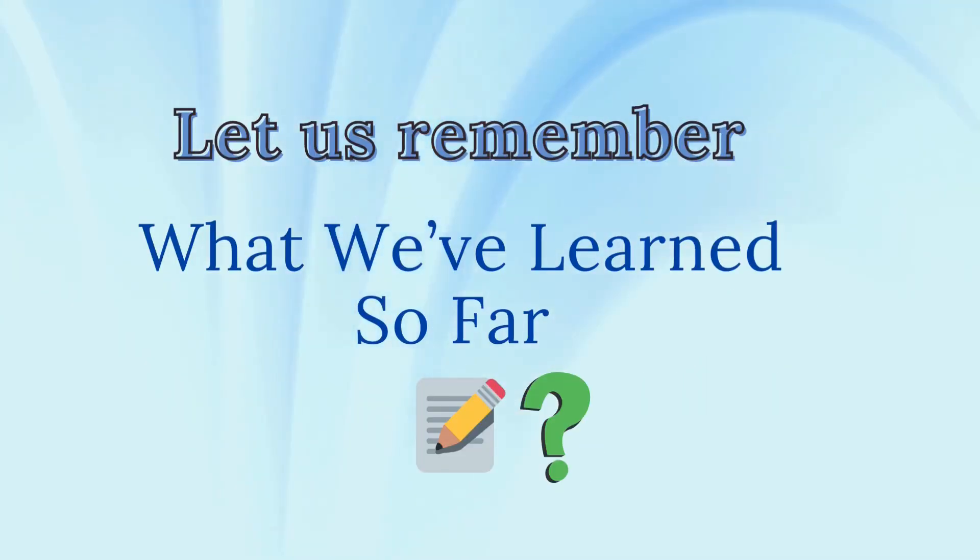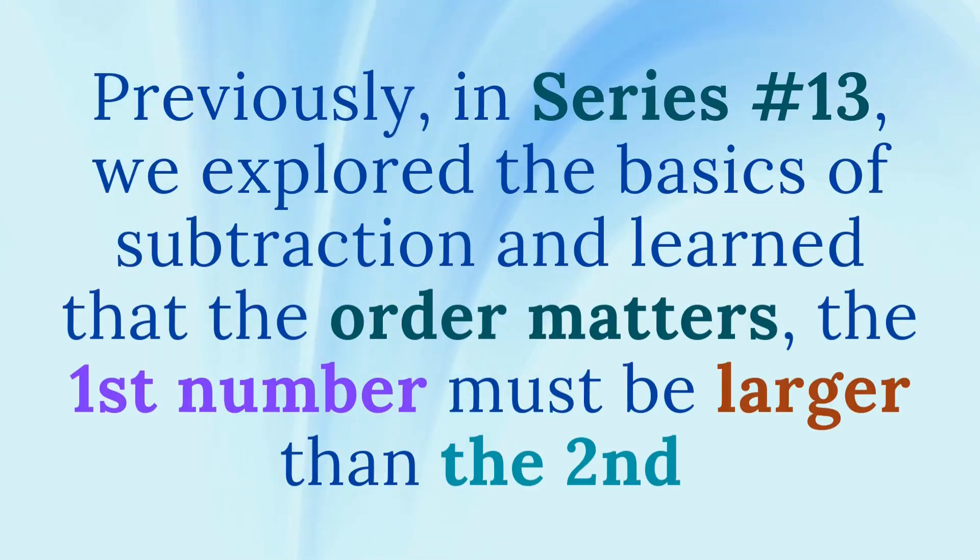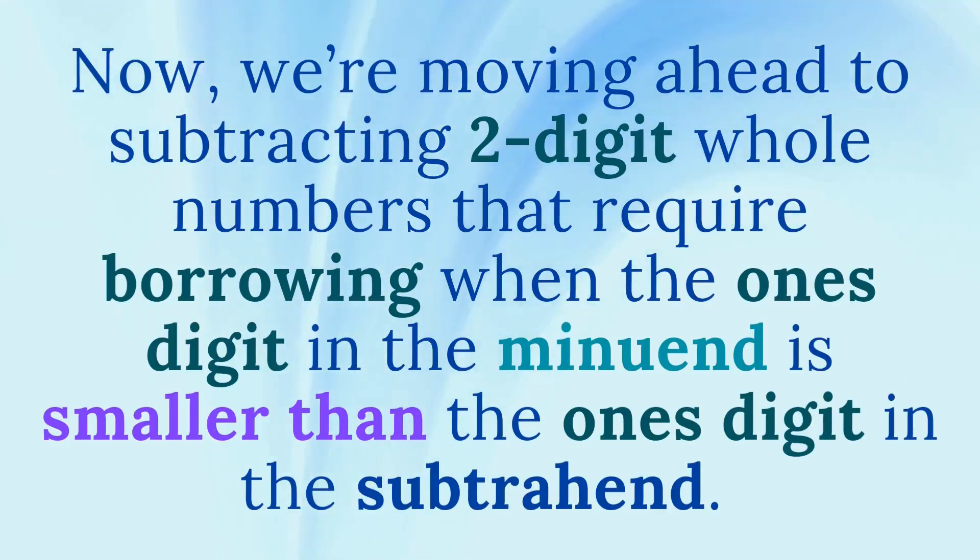What we've learned so far. Previously, in series number 13, we explored the basics of subtraction and learned that the order matters. The first number must be larger than the second. Now, we're moving ahead to subtracting two-digit whole numbers that require borrowing when the one's digit in the minuend is smaller than the one's digit in the subtrahend.